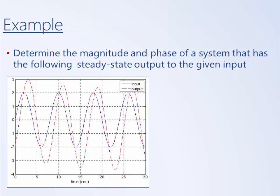Here we'll perform a little example to try and exemplify how we might experimentally derive a Bode plot. Imagine that we have some system and we fed it a sinusoidal input — this blue line — and the output signal is this red dashed line.